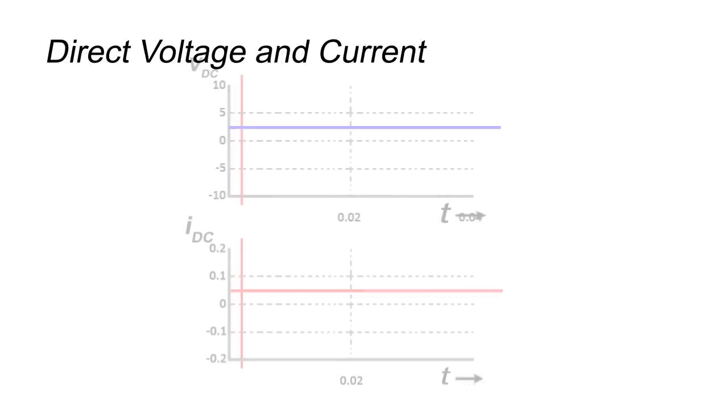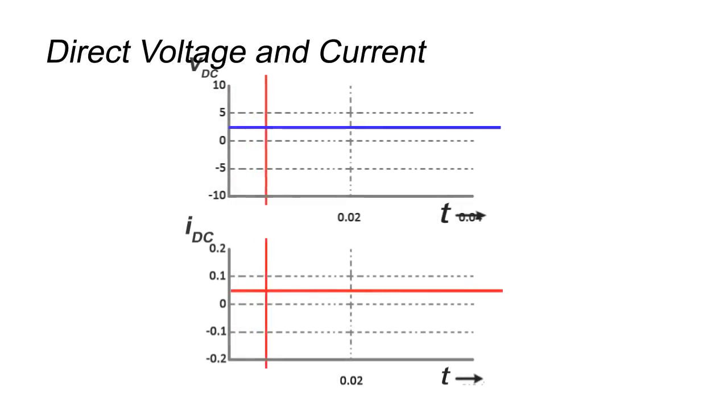Direct Voltage and Current: When available voltage and current does not change its direction with respect to time, then it is known as direct voltage and current respectively.